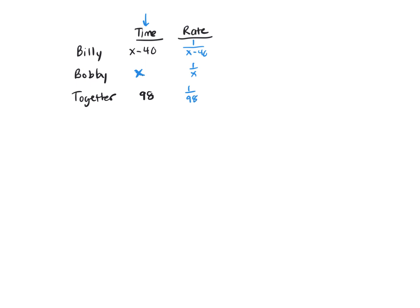And that represents, like Bobby's is 1 over X, he does 1 over X of the job working with somebody else. And the way you write your equation, you sum Billy and Bobby's rates, so 1 over X minus 40, plus 1 over X equals together.